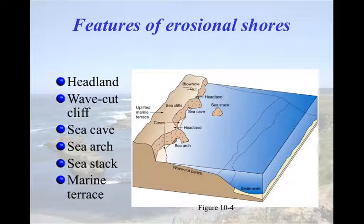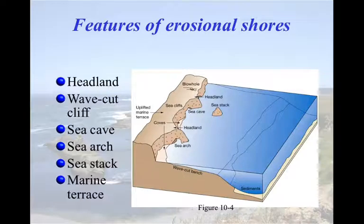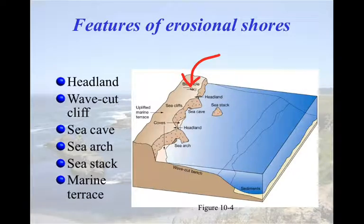This is the classic diagram from the book showing all the features: headlands, wave cut cliff, sea caves, sea arches, and eventually sea stacks. You should be able to identify all of these — and students really like the blowhole. You should also know the order in which caves, arches, and stacks form, so make sure you look that up.